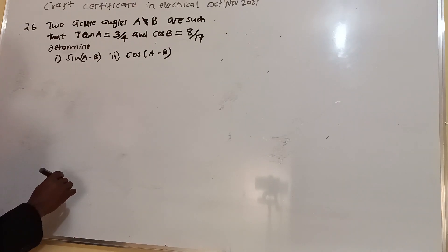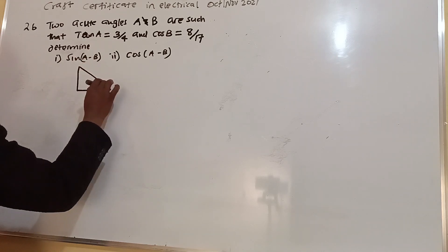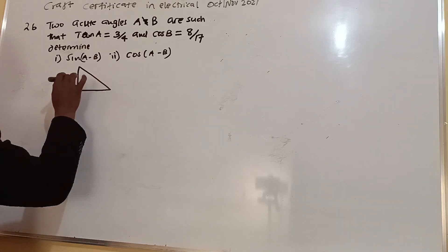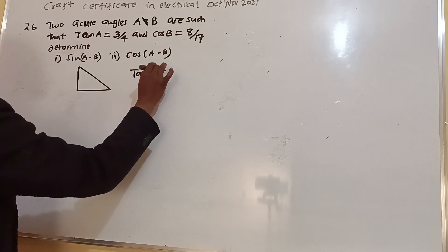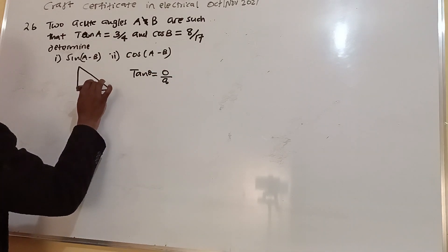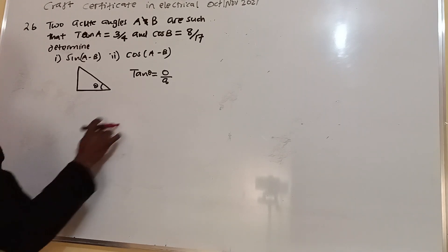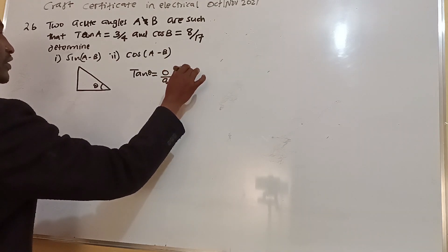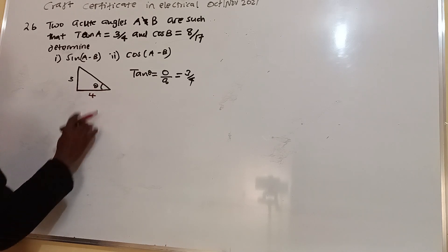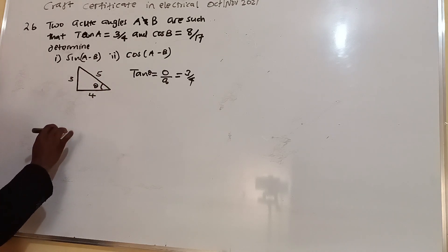We are told these two are acute angles, meaning they are less than 90 degrees. If you draw a right-angle triangle with an acute angle where tan A equals 3 over 4, you know tan is opposite over adjacent. So the opposite side is 3, the adjacent side is 4, and using Pythagoras' theorem, the hypotenuse is 5.